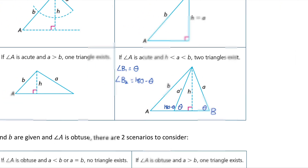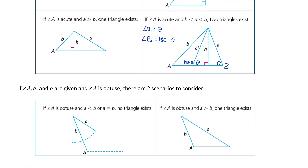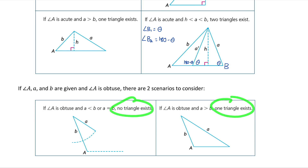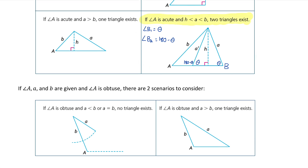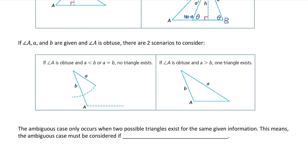One more thing: if the given angle is obtuse, we don't have to consider the ambiguous case of sine, because either no triangle exists or only one triangle exists. So we're only focusing on this very specific scenario — the ambiguous case applies when the given angle is acute and the side opposite from the given angle, side A, is bigger than the height of the triangle but less than the other given side.